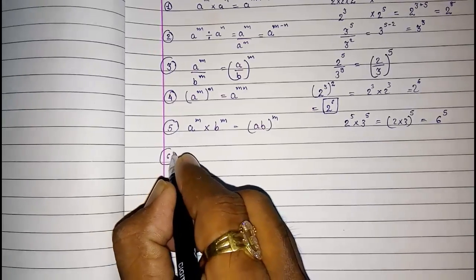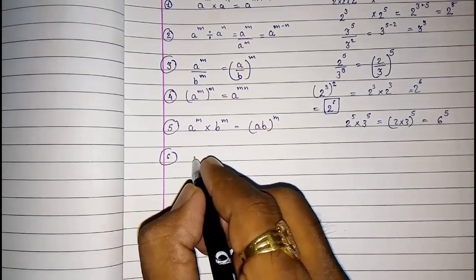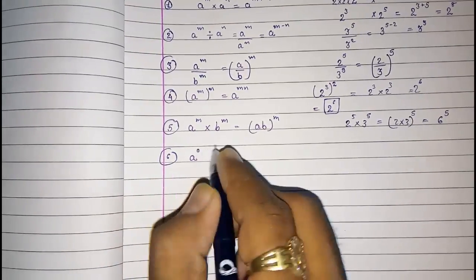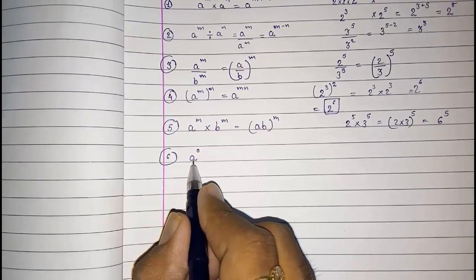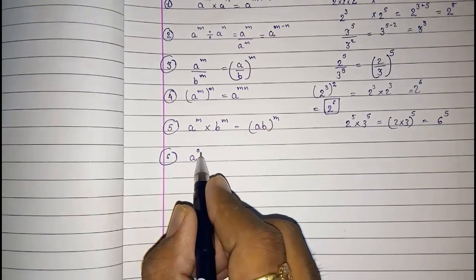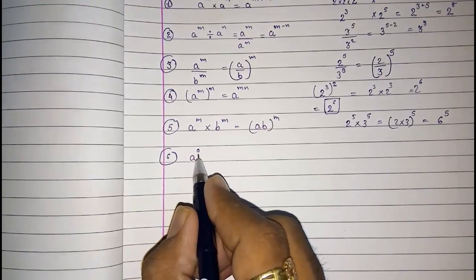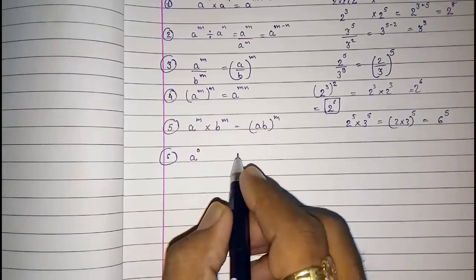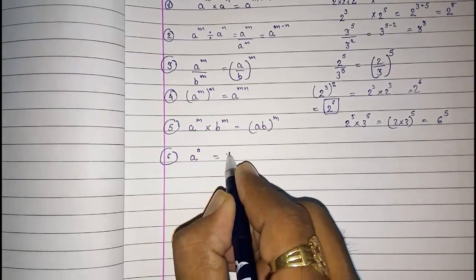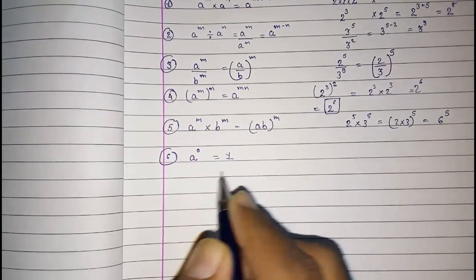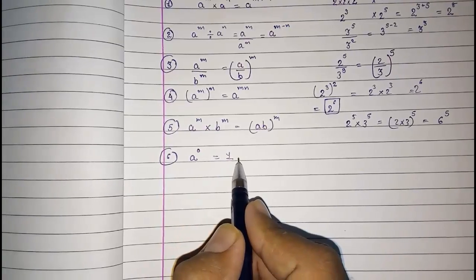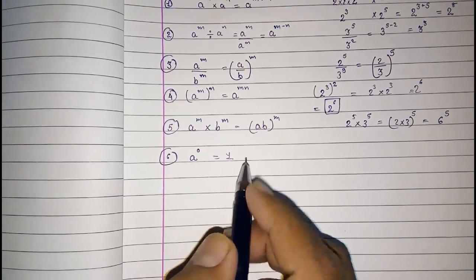The sixth law: a raised to 0 — whenever your power is 0, anything raised to 0 gives you 1. Always directly write 1.